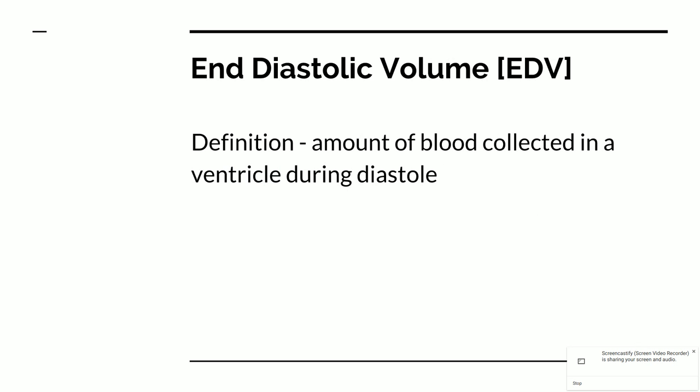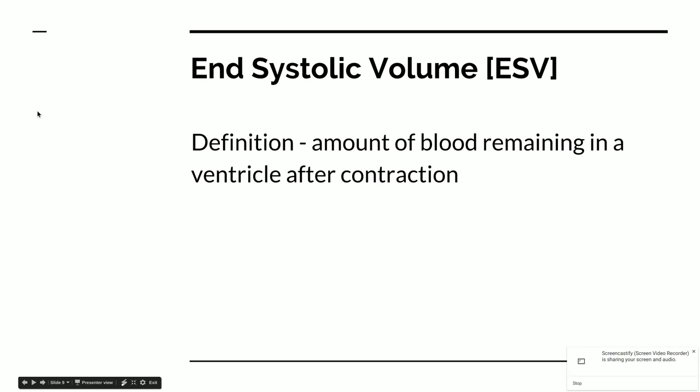End diastolic volume, EDV, is the amount of blood collected in the ventricle during diastole; this number must be measured and given to you — you won't calculate it. End systolic volume, ESV, is the amount of blood remaining in a ventricle after contraction, and again, this number must be given to you. Both values are useful for other calculations — you will need them to calculate stroke volume.